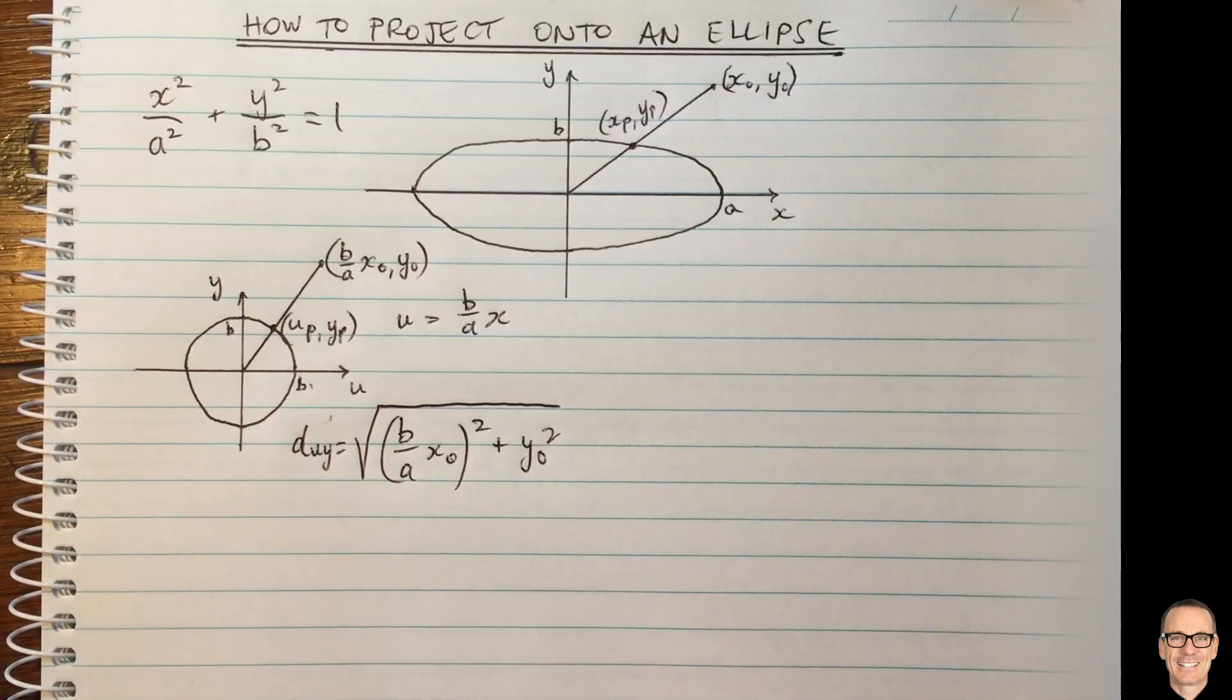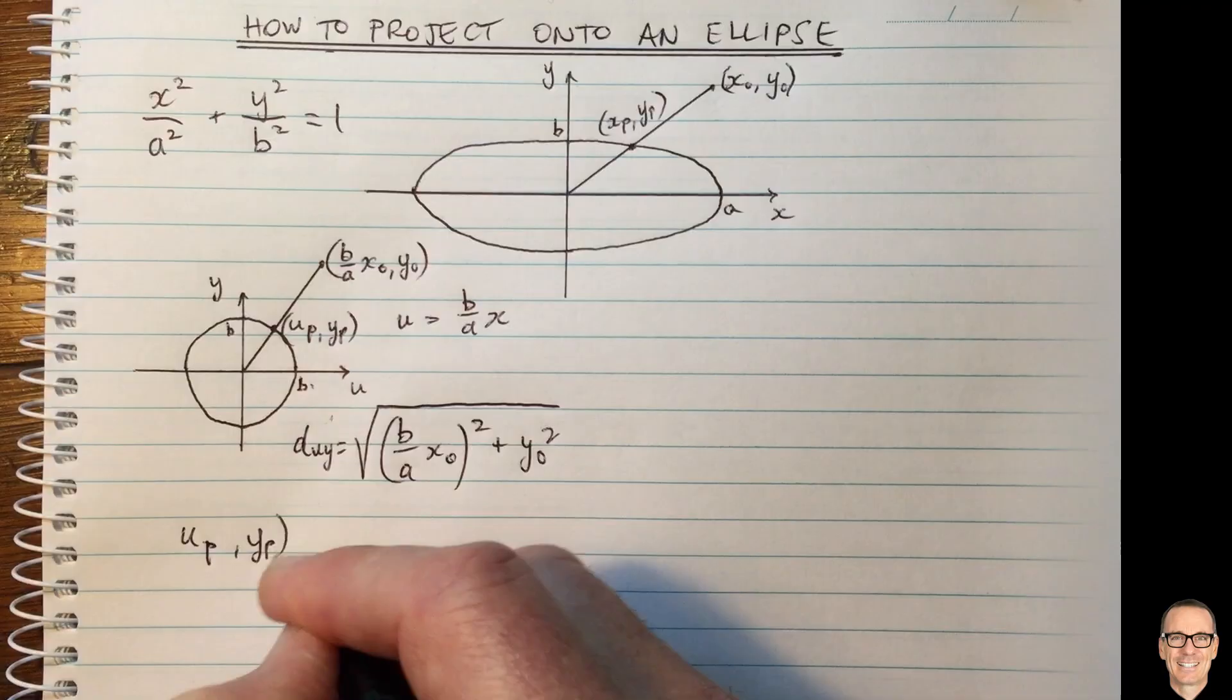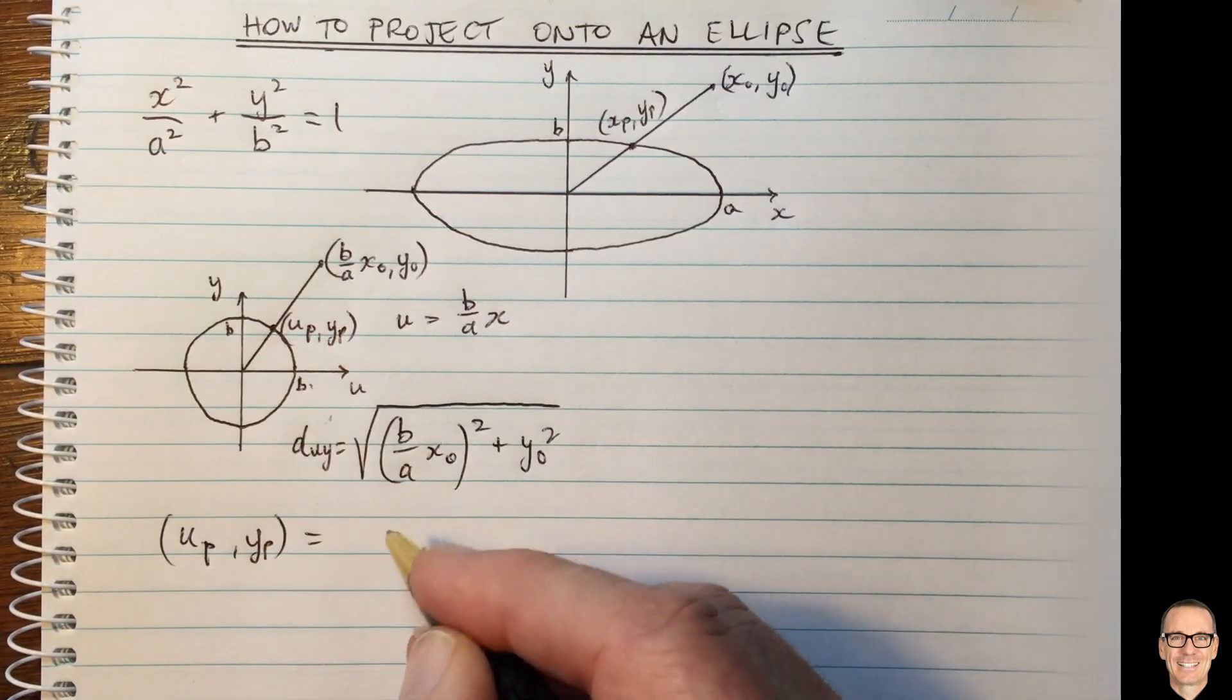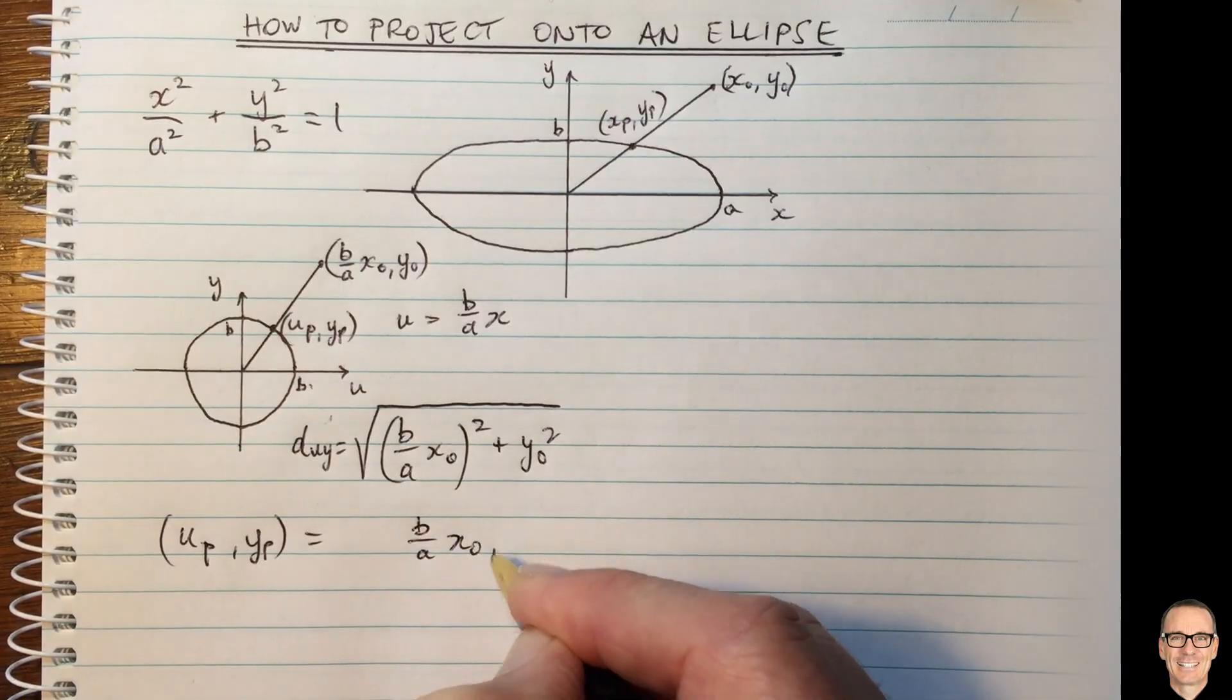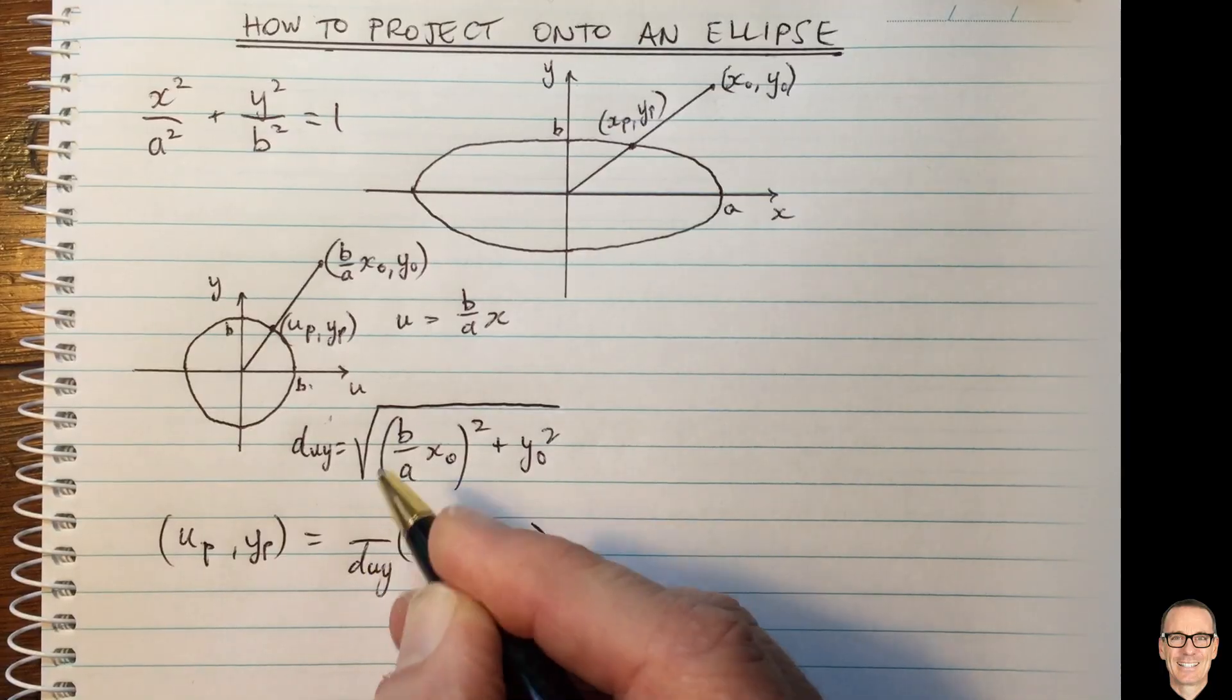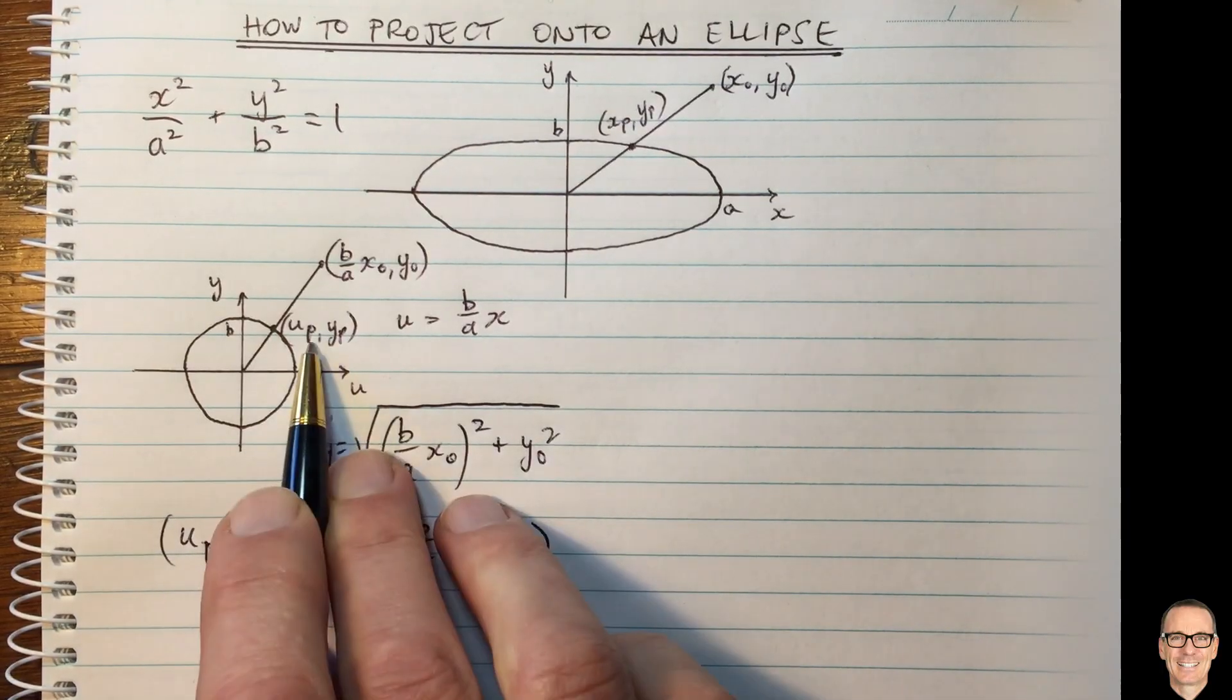And then we can find our point up, yp, which is going to be equal to this point here, which is b on a times x0 comma y0, scaled by dividing by duy and multiplying by b. And that gives you the point up, yp.